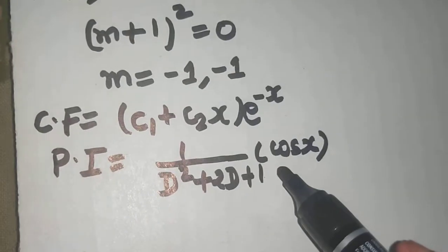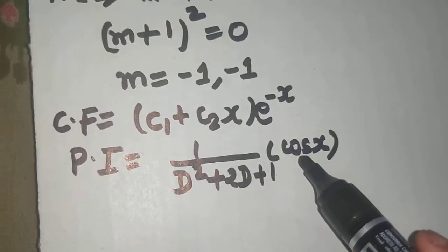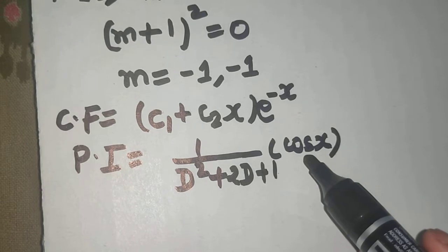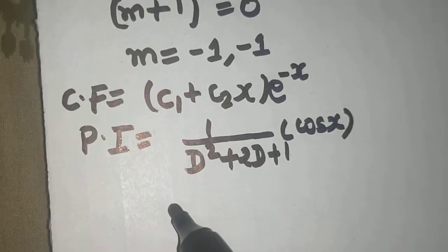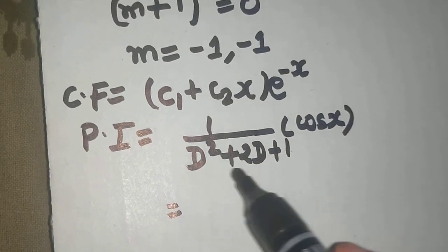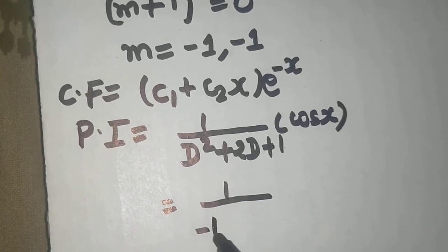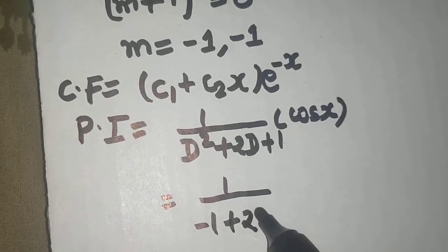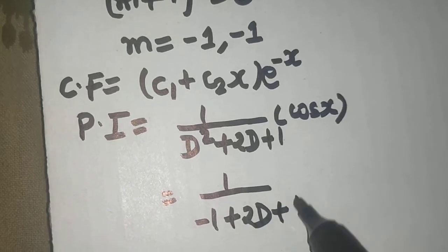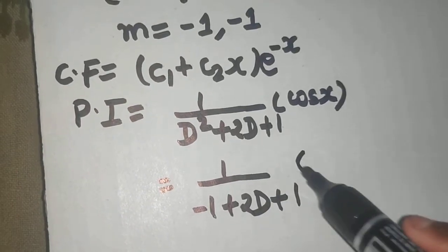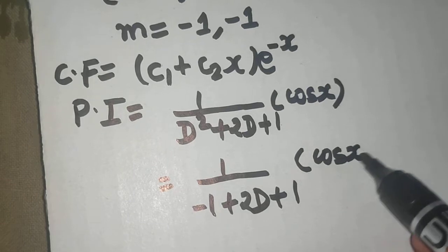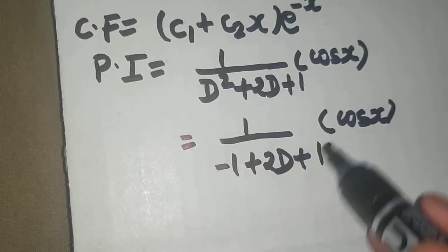So if you use that, a here is 1, so minus of a square is minus 1. So if you put in place of d square minus 1, so 1 upon minus 1 plus 2d plus 1, so minus 1 plus 1 will get cancelled, this cos x as it is. Now this gets cancelled.